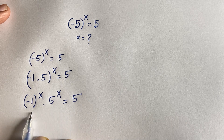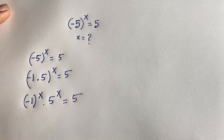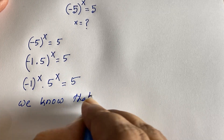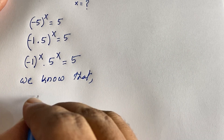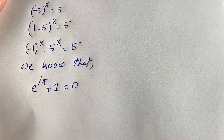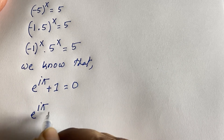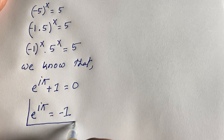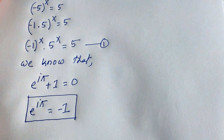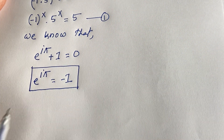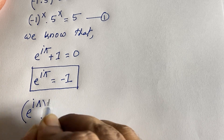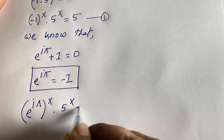Now we have (-1)^x, so how do we handle this term? We use Euler's formula: e^(iπ) + 1 = 0, which gives us e^(iπ) = -1. Substituting this value, (-1)^x becomes (e^(iπ))^x, so our equation becomes e^(iπx) × 5^x = 5.